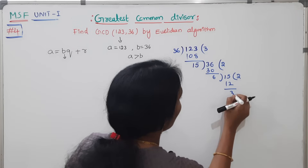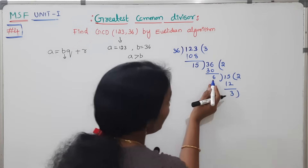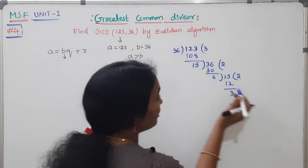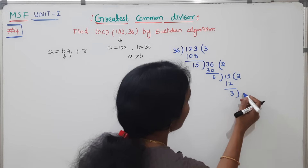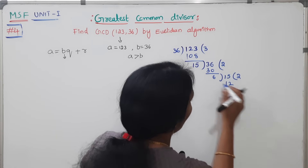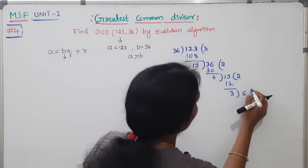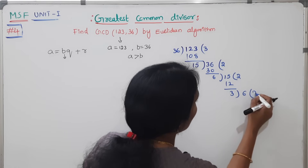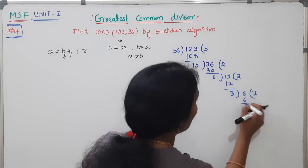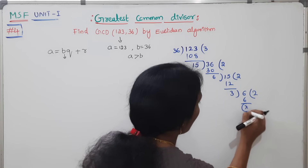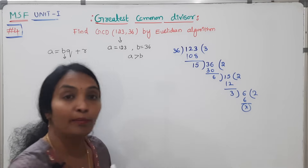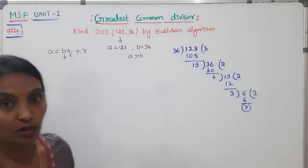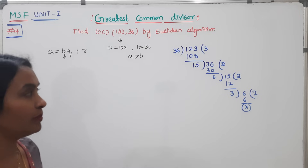I will divide the remainder again: 3. Remainder 6, 3 times 2 is 6. The remainder becomes 0. Then stop the method.